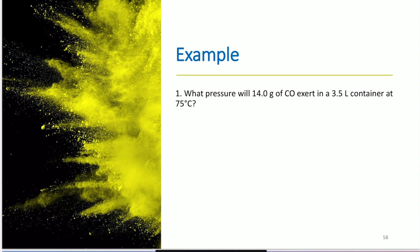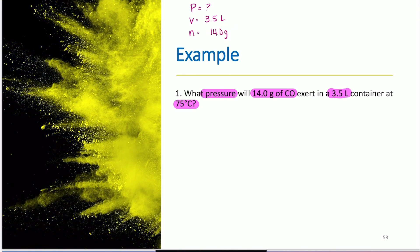First example: what pressure will 14.0 grams of CO2 exert in a 3.5 liter container at 75 degrees C? I want to know pressure. I'll use PV = nRT. V is 3.5 liters. For n, I have 14.0 grams of CO2 — carbon monoxide has a molecular weight of 28.01 grams per mole, giving 0.500 moles.